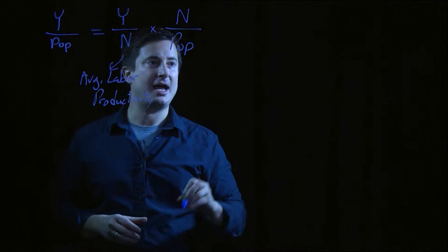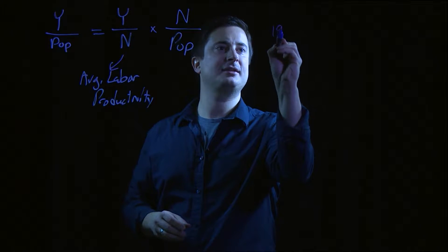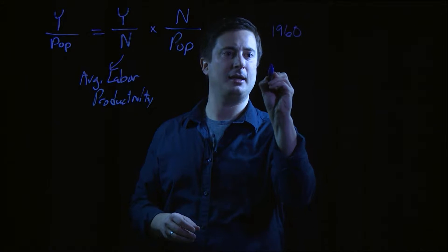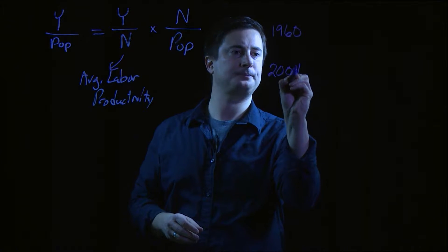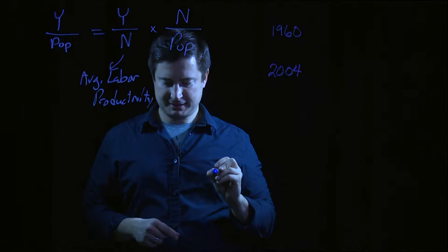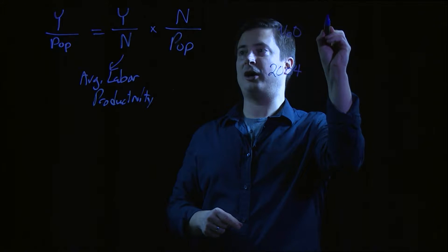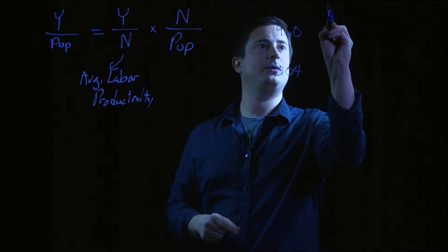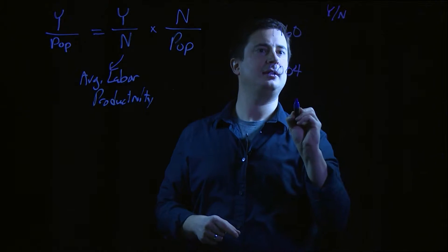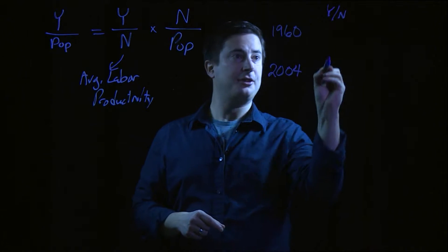So let's imagine we have two years, 1960 and 2004. And in 1960, let's say our average labor productivity, Y over N, is $38,000.